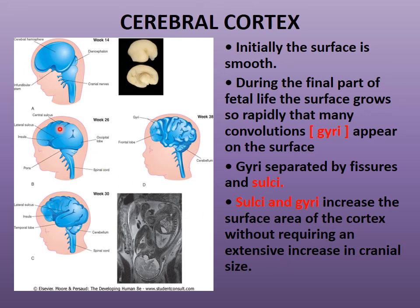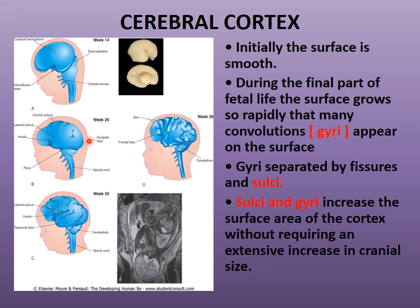Looking at the cerebral cortex development across different weeks — at 14 weeks, week 26, and week 30 — we can see the progress of the cerebral hemispheres. Initially the surface is smooth, but during the final part of fetal life the surfaces grow rapidly and convolutions called gyri appear. The gyri are separated by fissures called sulci — gyri are the elevations and sulci are the depressions.